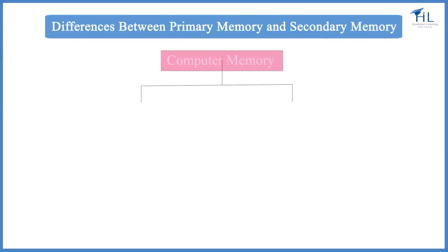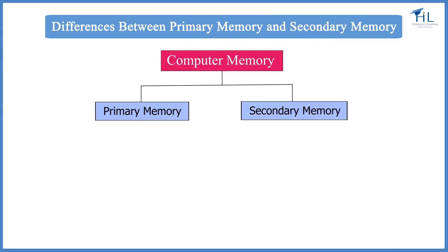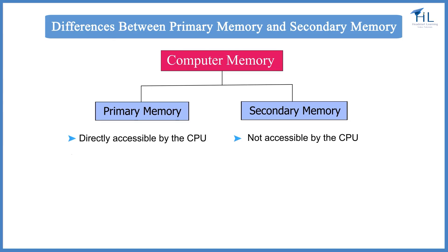The key differences between primary memory and secondary memory are: primary memory is directly accessible by the CPU, whereas secondary memory is not. Primary memory is generally volatile and holds data for short periods of time, whereas secondary memory is non-volatile.